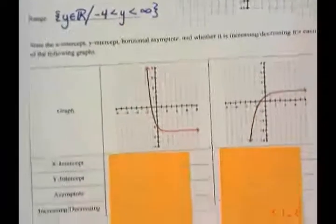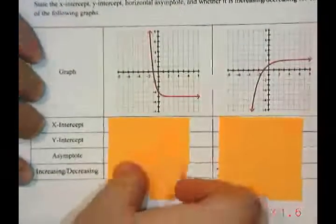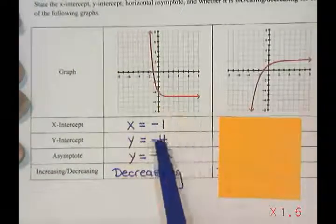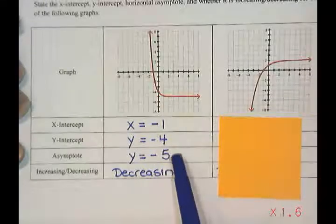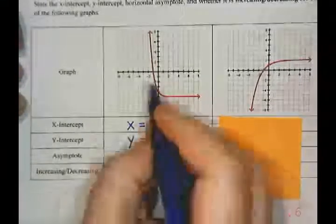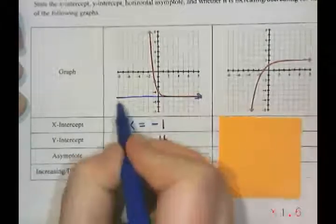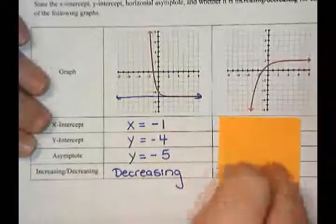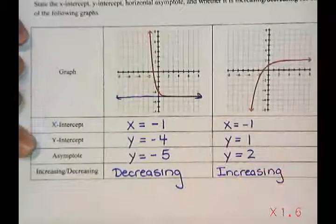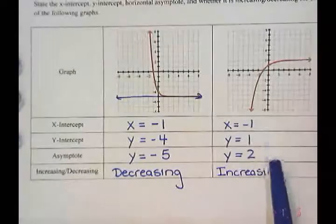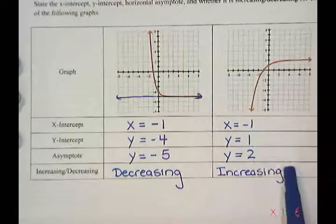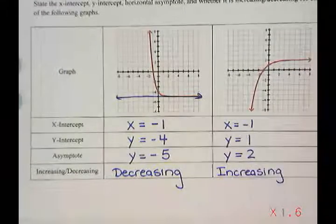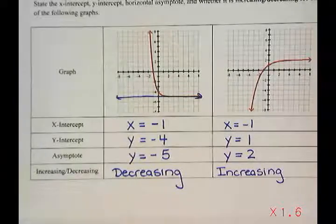Hopefully you paused the video and tried answering these two. For the first one, the x-intercept is negative 1, the y-intercept is negative 4, the asymptote where it's leveling off is at negative 5, and it's decreasing because the curve is going down. For the second one, the x-intercept was also negative 1, the y-intercept was positive 1, the asymptote is at the top of the curve at 2, and it is increasing. So that's it for this part.